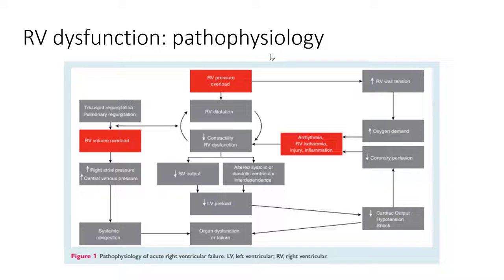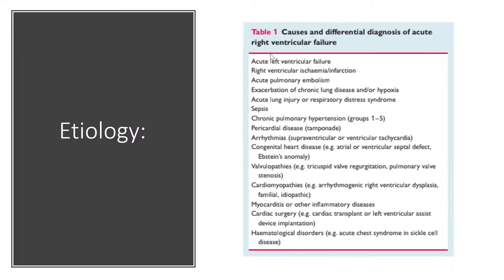Furthermore, increased RV wall tension increases oxygen demand, decreases coronary perfusion, and can subsequently lead to arrhythmias and RV ischemia, worsening injury and inflammation in the RV and further worsening contractility. In terms of the causes and differential diagnosis of acute right ventricular failure, the most important to keep in mind are: acute pulmonary embolism, exacerbation of chronic lung disease or hypoxia, acute lung injury, sepsis, pericardial diseases, and coronary artery disease or right ventricular infarct.